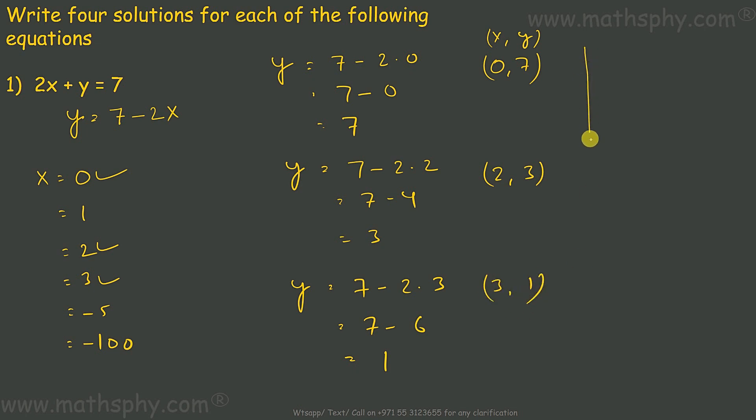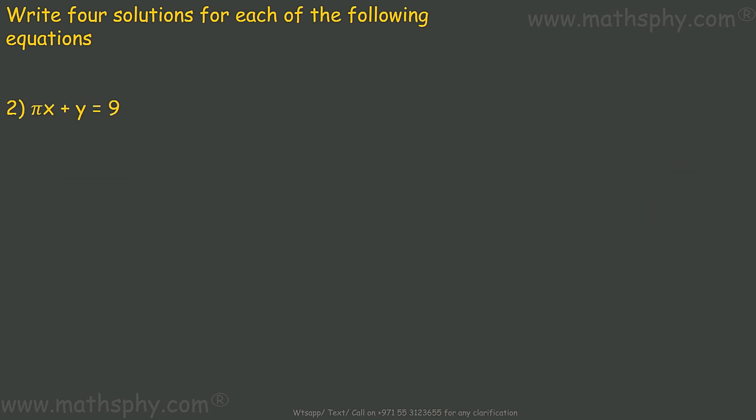Fourth one, let's take x as negative 100. So, y would be 7 minus 2 into negative 100, this would be 7 minus, minus 200 means, minus minus plus, this would be 207. So, x is negative 100, y is 207. This here,